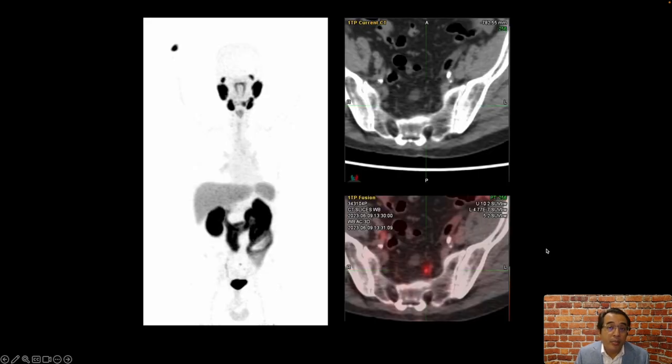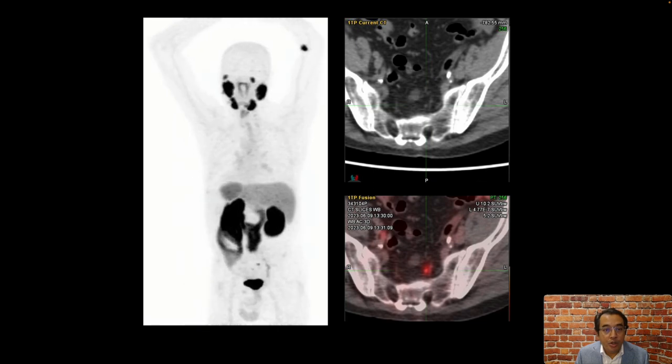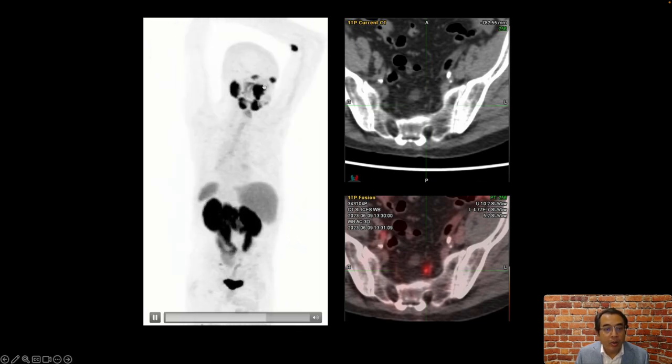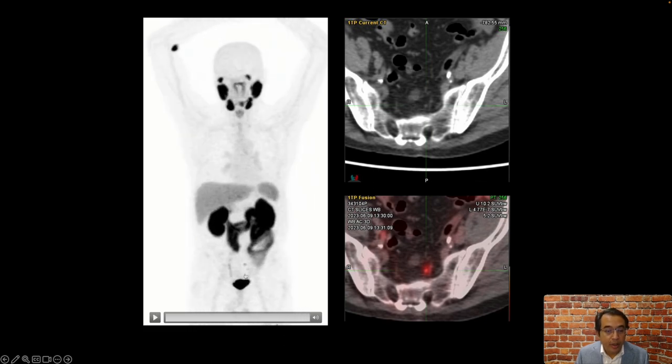This patient then presented with rising PSA, and at that time, a PSMA PET CT was performed. Here's the rotating image. This rotating image shows physiologic distribution of the tracer, which includes the lacrimal glands, the salivary glands, liver, spleen, and excretion from the kidneys into the bladder.